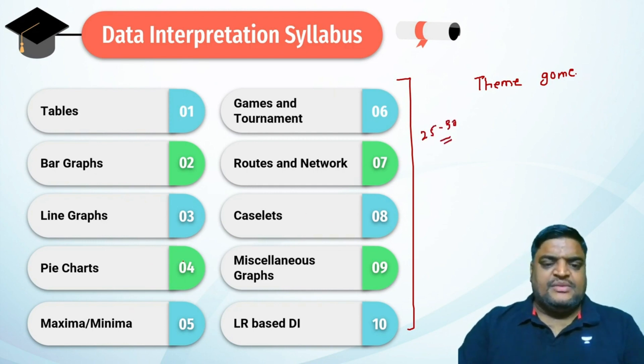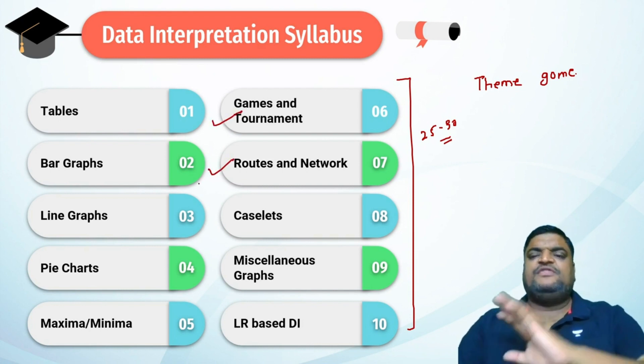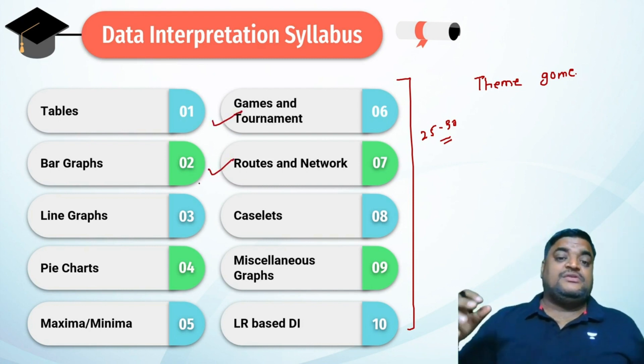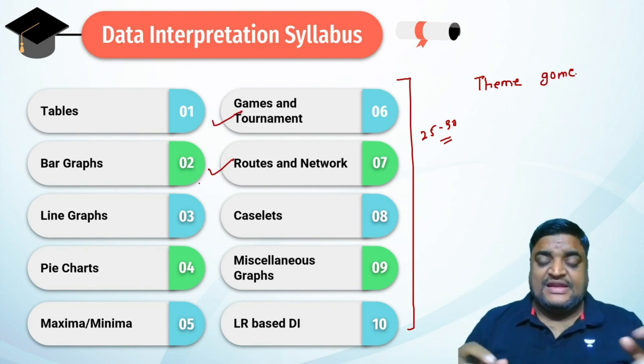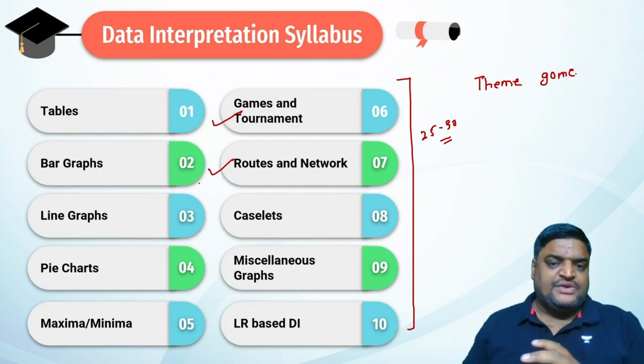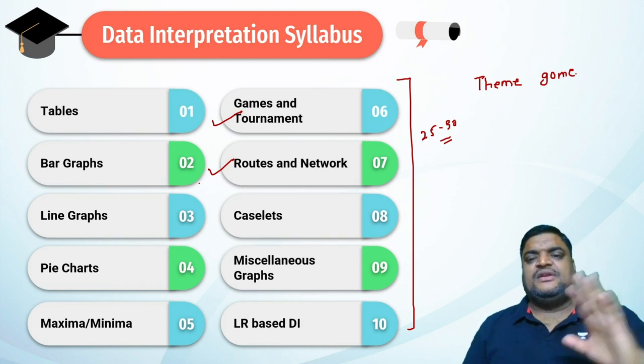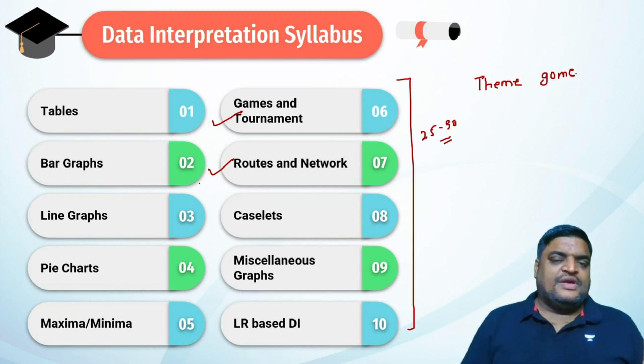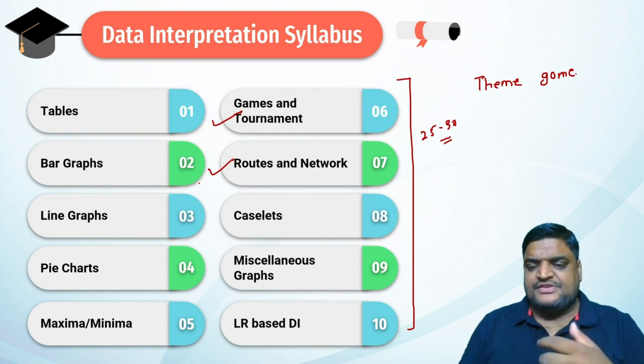Games and tournaments has four to five themes, routes and networks has three to four themes. All of them have some themes. You should solve at least one question on each of the themes to get hold of that theme. The questions are generally repetitive - once you are practiced enough, you will figure out that the questions and themes are repeating themselves.